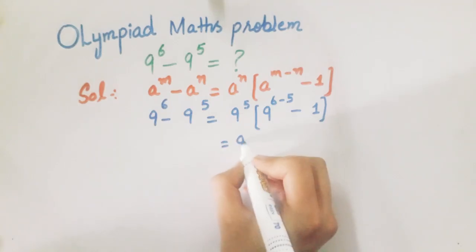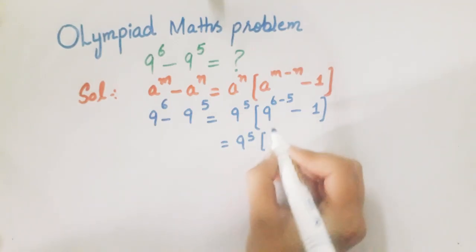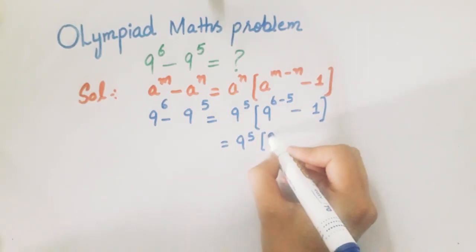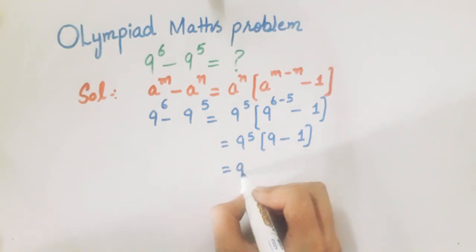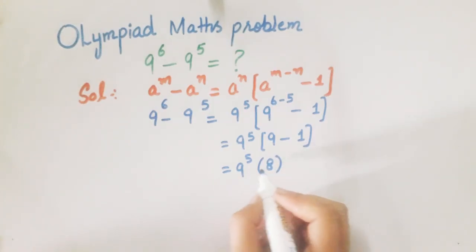So we have 9^5 times [9^(6-5) - 1]. That's 9^5 times (9 - 1). 9 minus 1 is 8, so we get 9^5 × 8.